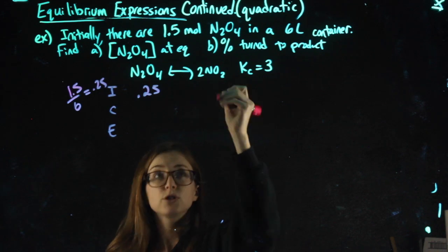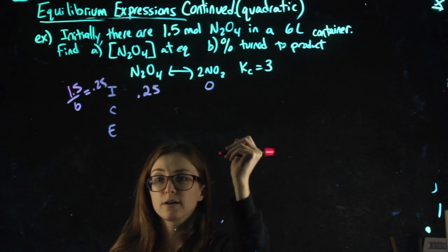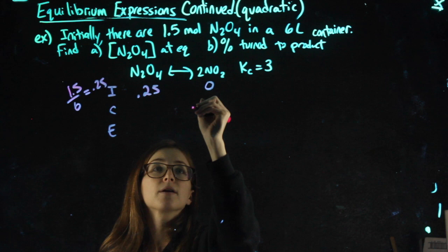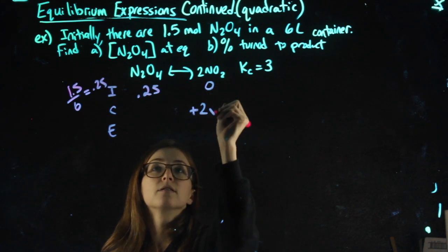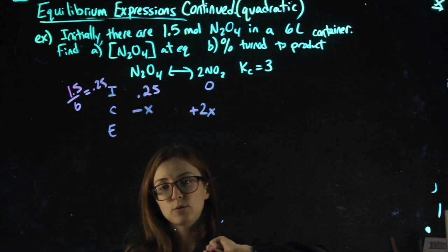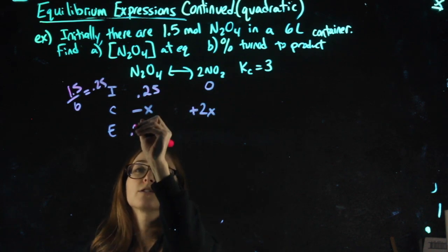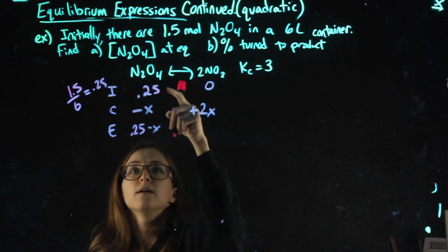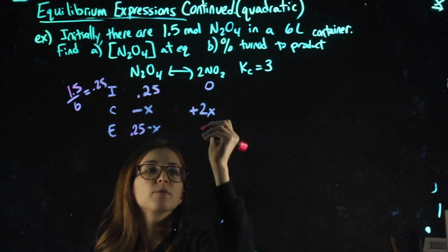I'm not given a value for NO2, so I will say 0 to start. The side with 0 I'm going to make positive. The other side becomes negative, and since I don't have equilibrium values, I just write expressions here: 0.25 minus X and 0 plus 2X.